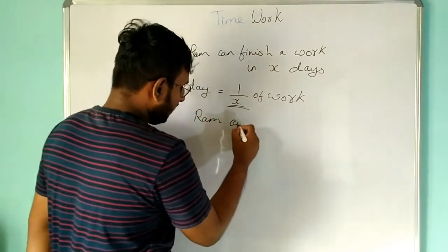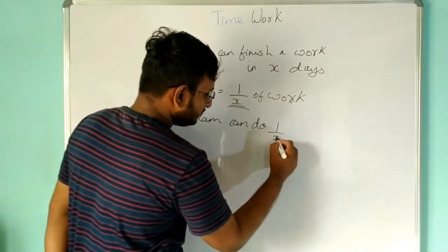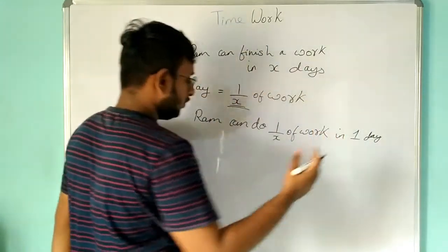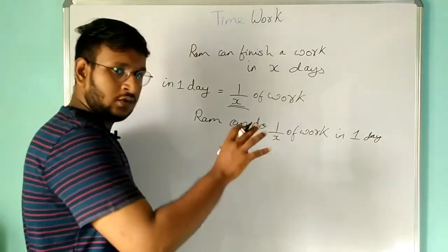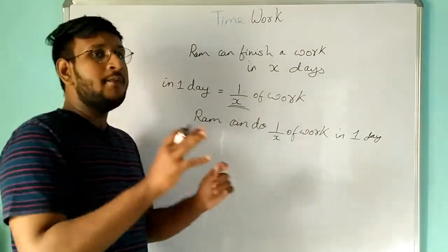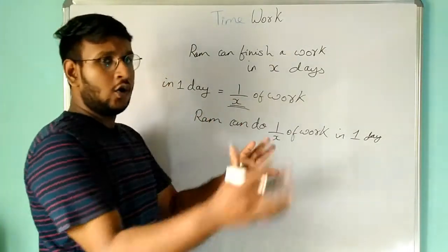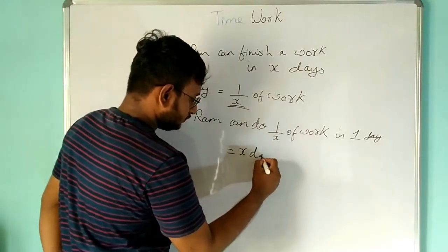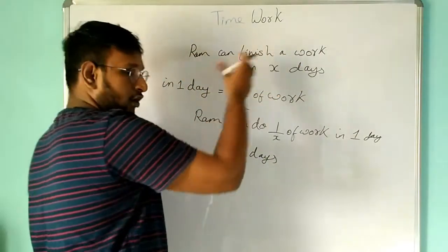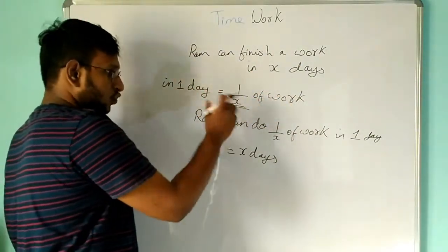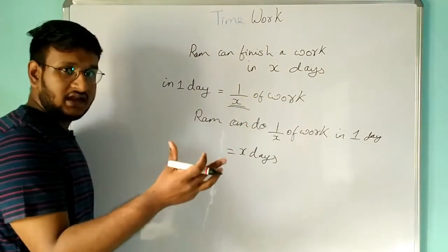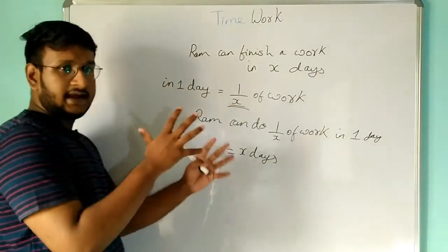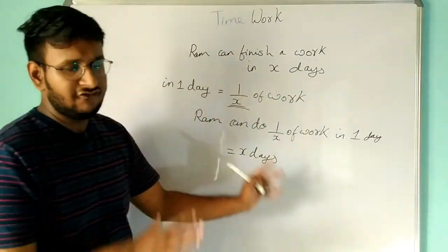So if someone can do 1/X of the work in one day, then how many days will he take to complete the entire work? He will take X days. If he takes X days to complete a work, then in one day he completes 1/X of the work. And conversely, if he is doing 1/X of the work in one day, he will take X days to complete the whole work. That's the simple concept the entire time and work topic revolves around.